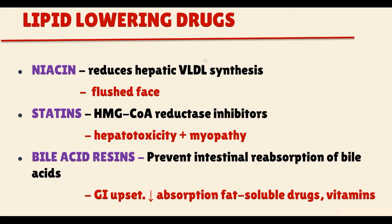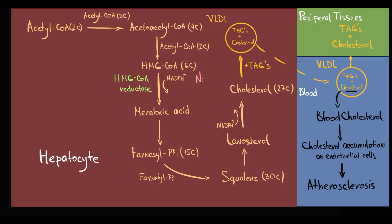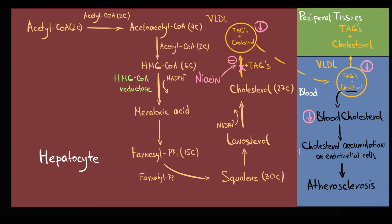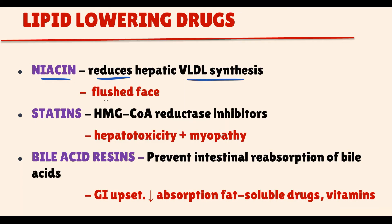There are certain drugs that prevent atherosclerosis, called lipid-lowering drugs. The first one is niacin. Niacin inhibits the production of very low-density lipoproteins. If the production of VLDL decreases, then the amount of cholesterol and triacylglycerols in the blood decreases, and atherosclerosis progression slows. An important side effect to know is that niacin can cause flushing of the face — flushed face is the signature side effect of niacin.